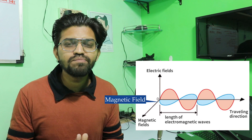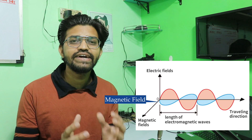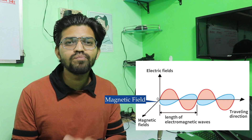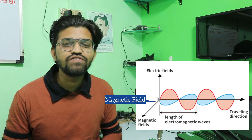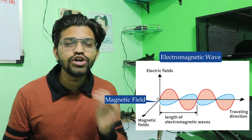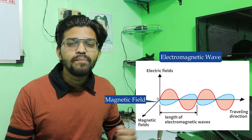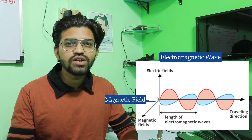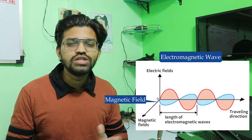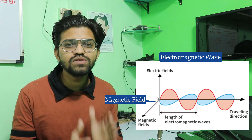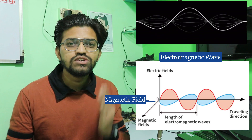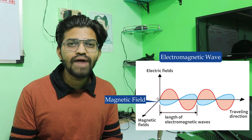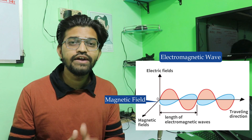This magnetic part is also present, and this whole wave is called an electromagnetic wave. It has a vertical electric component that moves up and down, and a horizontal magnetic component that moves to and fro. This is known as the electromagnetic wave, and it is produced because of the oscillation of a charged particle in space — this is how electromagnetic waves are produced.